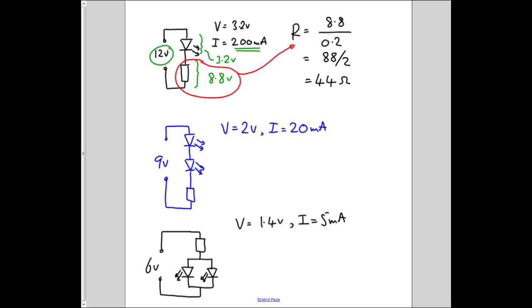The next one is slightly more complex, because my LED voltage is only 2 volts, but I've got two of them. So it's 2 volts here, 2 volts here. So that leaves 9 minus 2 is 7, minus another 2 is 5. So we have 5 volts across the resistor.